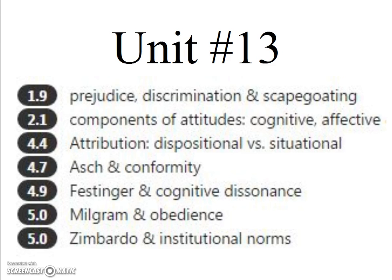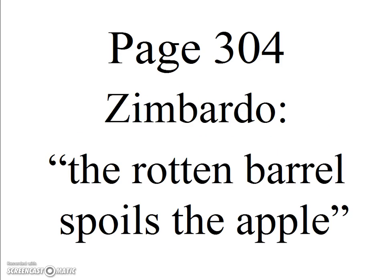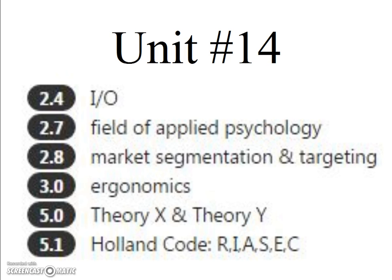Unit 13 focused on many things. Some students want to know more about Zimbardo. He gave us the Stanford Prison Experiment, in which normal students were assigned to the roles of guard or prisoner. Zimbardo concluded that institutional norms corrupt the individual — the rotten barrel spoils the apple. What I think is most important in Unit 13 is Festinger's theory of cognitive dissonance: people will change what they believe in order to match what they do.